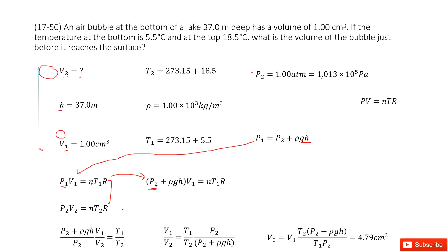Now we look at this function and this function, we try to solve it. You can see R we don't know, n we don't know, so the only way to solve it is we use this function divided by this function. So at the left-hand side, we have P2 plus ρgh V1 divided by P2 V2.